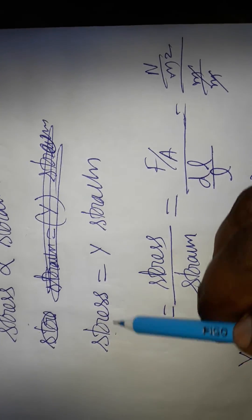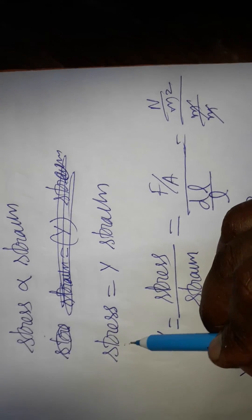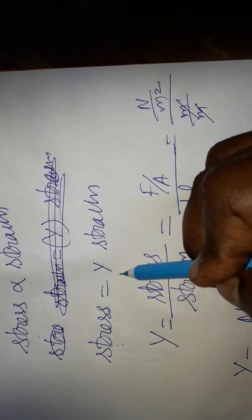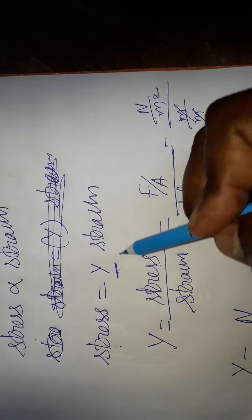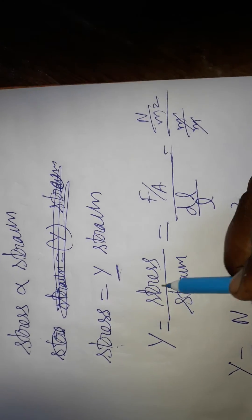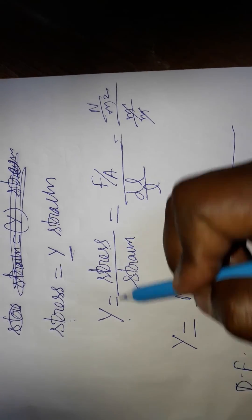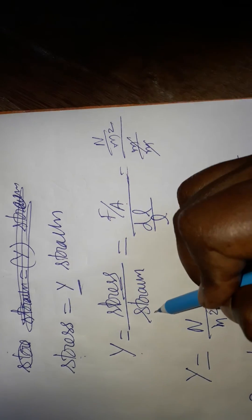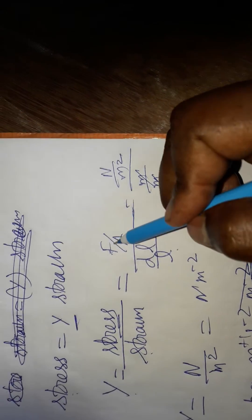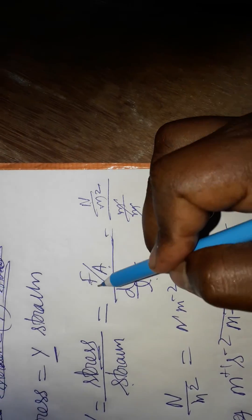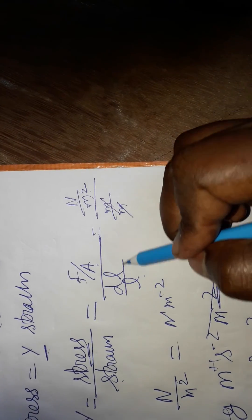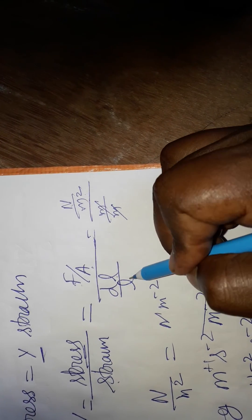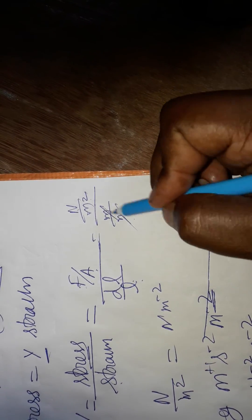To repeat: stress is directly proportional to strain. Stress equals Young's modulus times strain, so modulus of elasticity equals stress divided by strain. Stress is force per unit area (Newton per meter square) and strain is change in length by original length (meters cancel), confirming the SI unit is Newton per meter square.